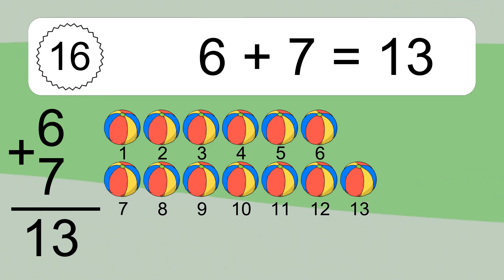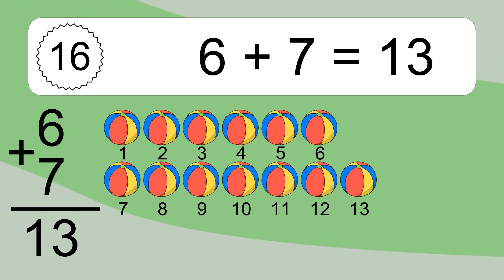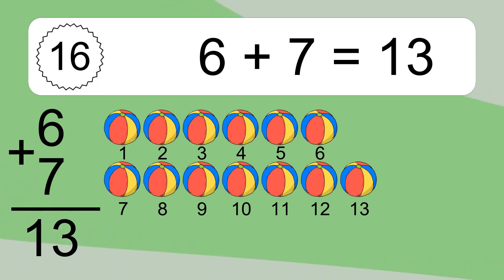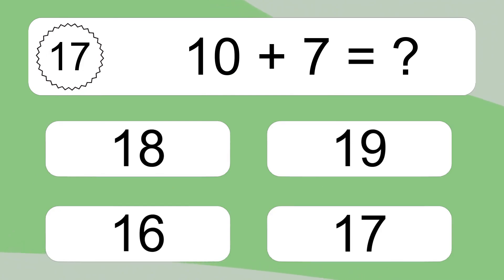Six plus seven equals thirteen. Let's count it: one, two, three, four, five, six, seven, eight, nine, ten, eleven, twelve, thirteen. Ten plus seven equals what?